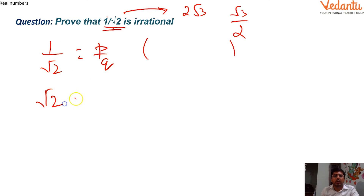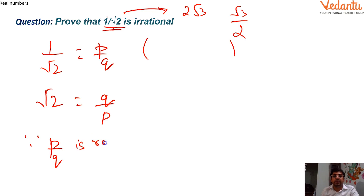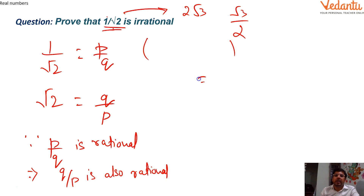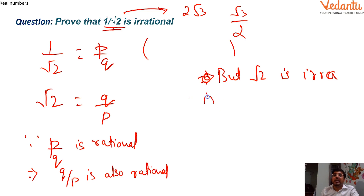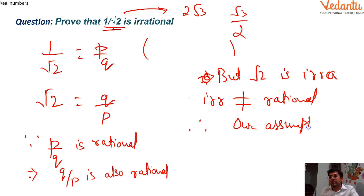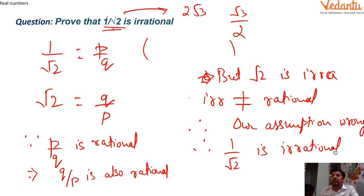Taking the reciprocal of both sides gives √2 = q/p. Since p/q is rational, its reciprocal q/p is also rational. But √2 is irrational. An irrational number cannot be equal to a rational number. Therefore our assumption was wrong, and hence 1/√2 is irrational. Hence proved.